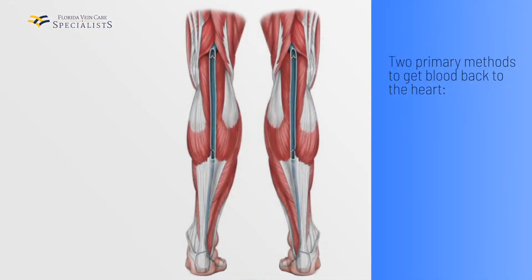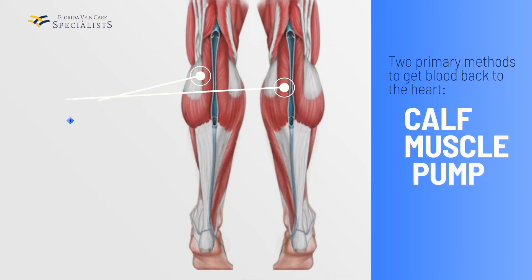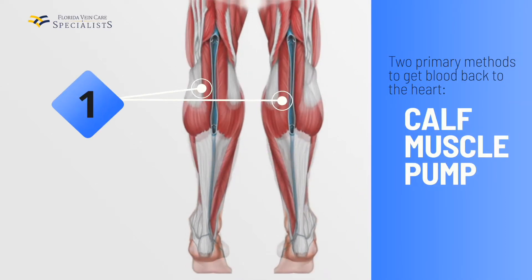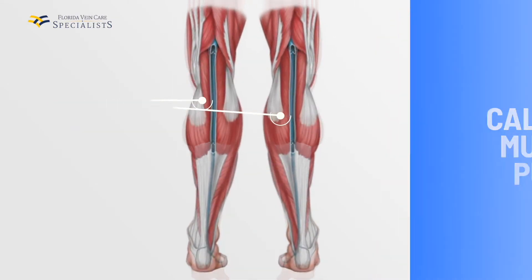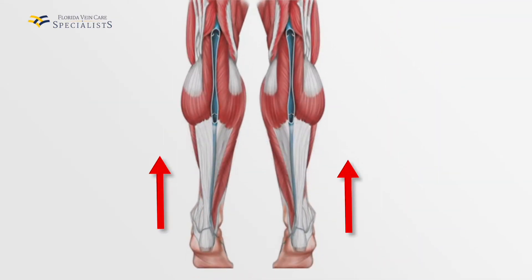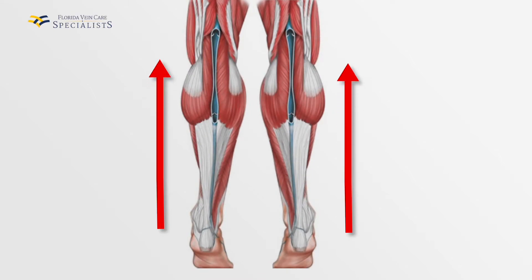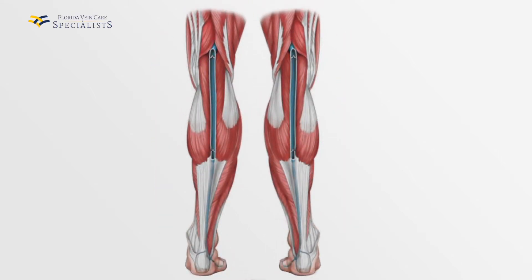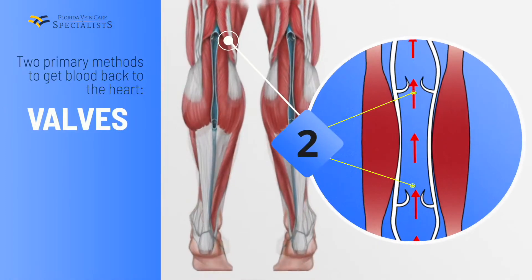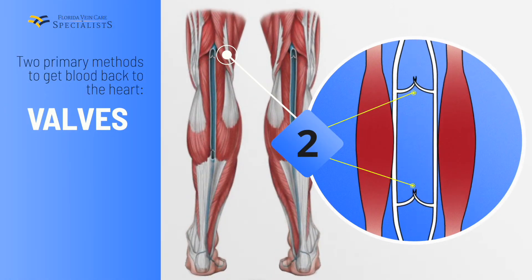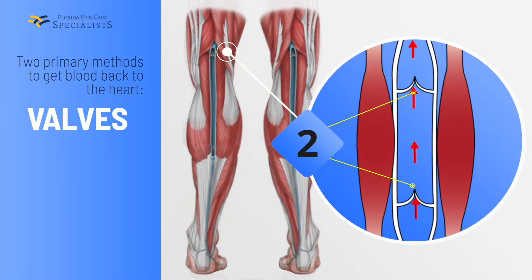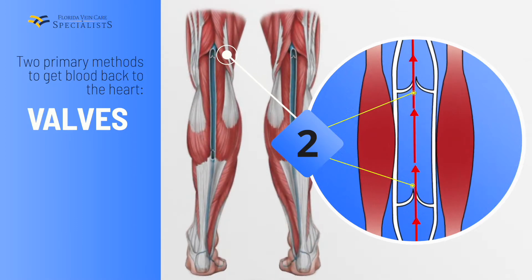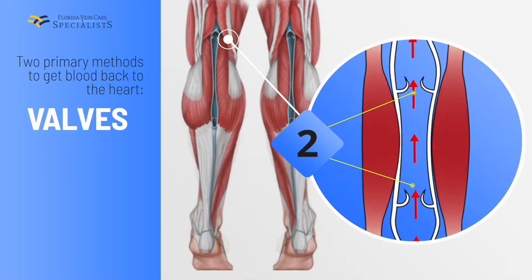Veins have two primary methods to bring blood back to the heart. The first is the calf muscle pump. The large veins in the calf are completely surrounded by muscle. When the muscles contract, they squeeze the vein and push the blood up — similar to squeezing a tube of toothpaste. The second method is valves, which act like one-way doors inside the veins, allowing blood to come up but not back down.